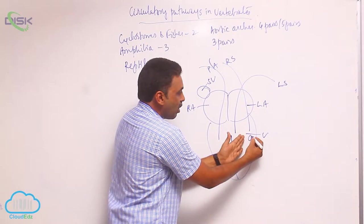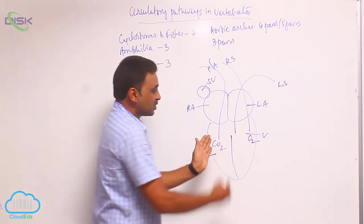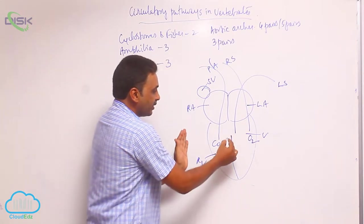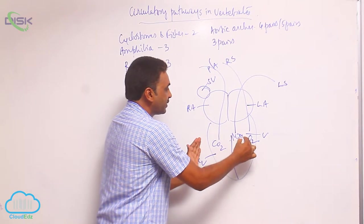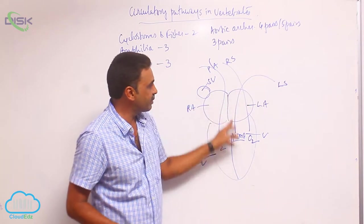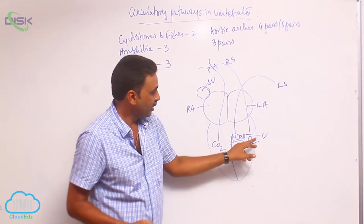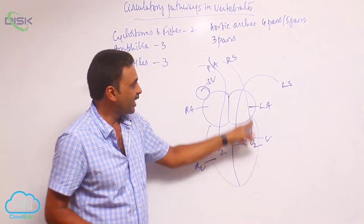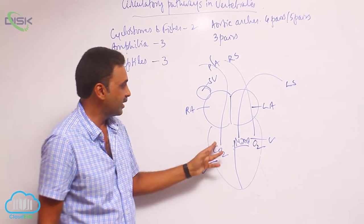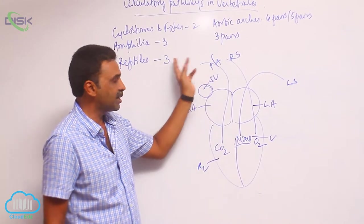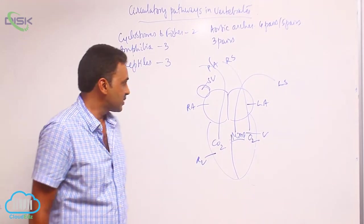This is taking oxygenated blood, this is taking deoxygenated blood, and this is taking mixed blood. The left systemic will take the mixed blood, the right systemic will take oxygenated blood, and the deoxygenated blood is taken outside by the pulmonary arches.